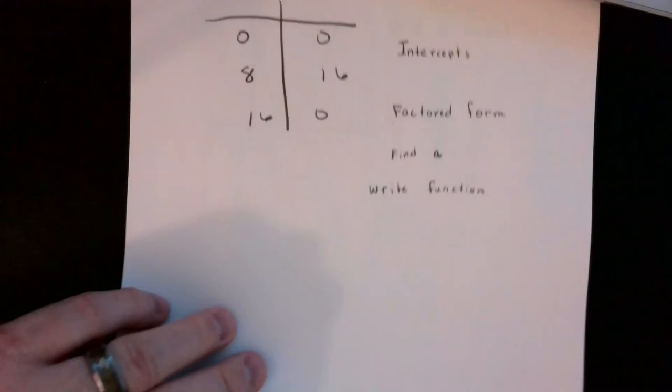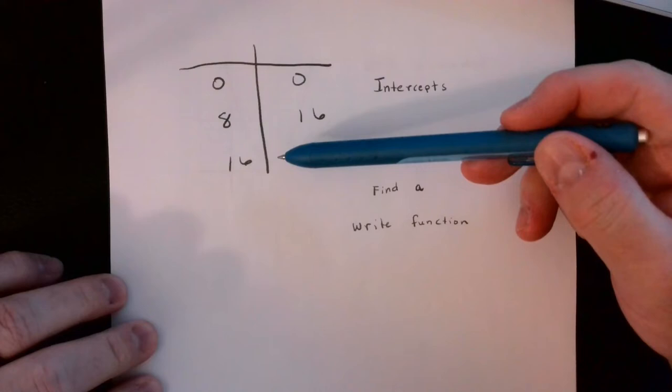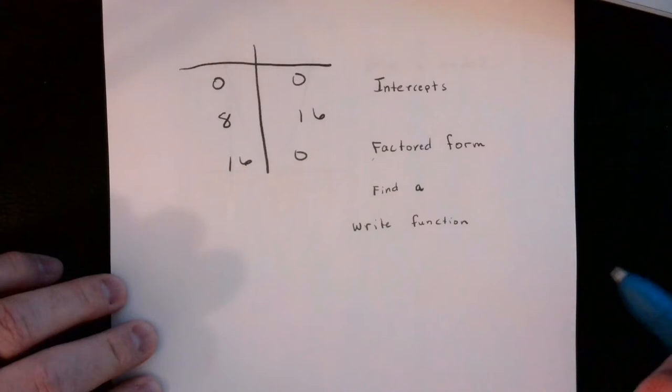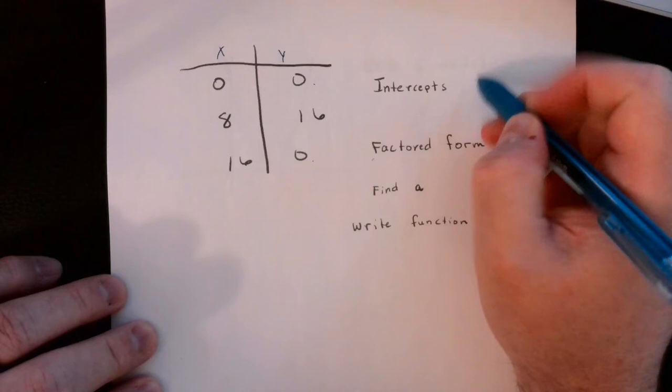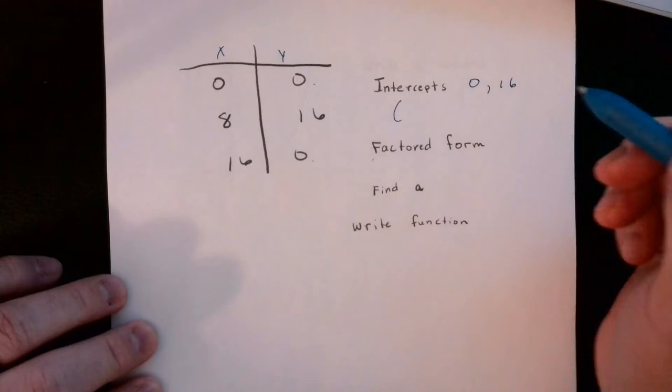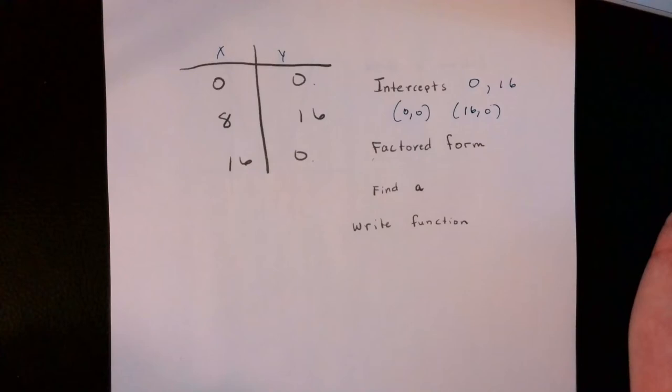Here's another generic problem. You're given a table and asked to find the x-intercepts. The x-intercepts are where the y-values equal 0. Looking at the table, the x-intercepts are at x equals 0 and x equals 16, or as points: (0, 0) and (16, 0).